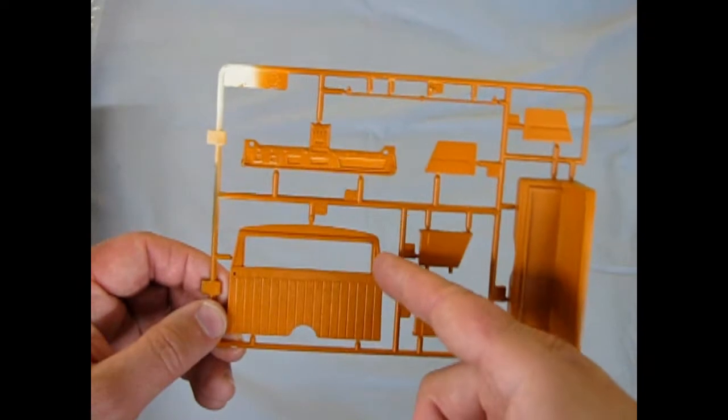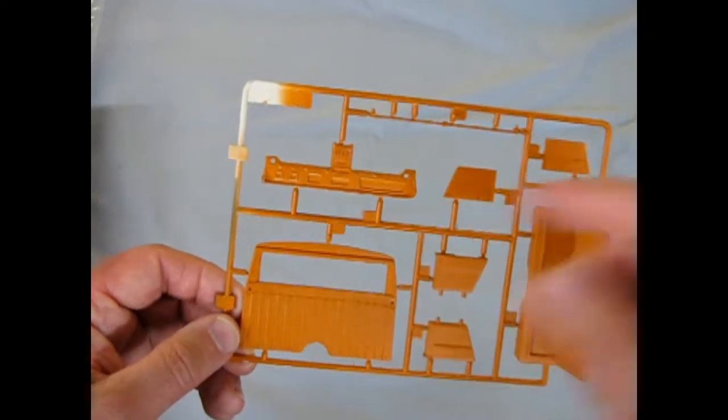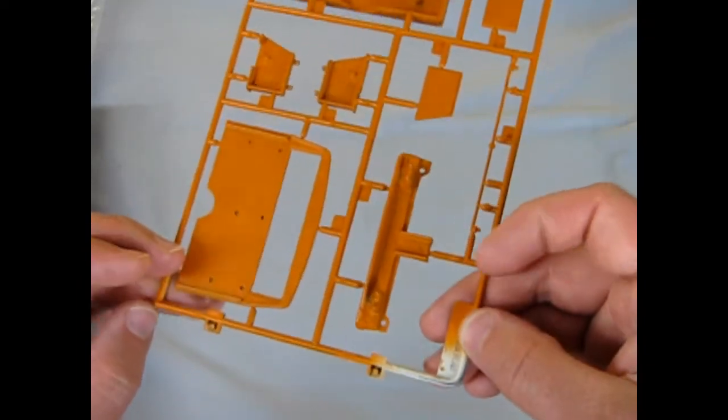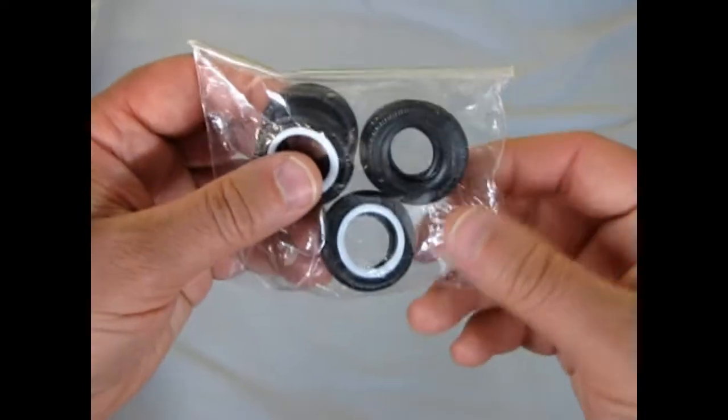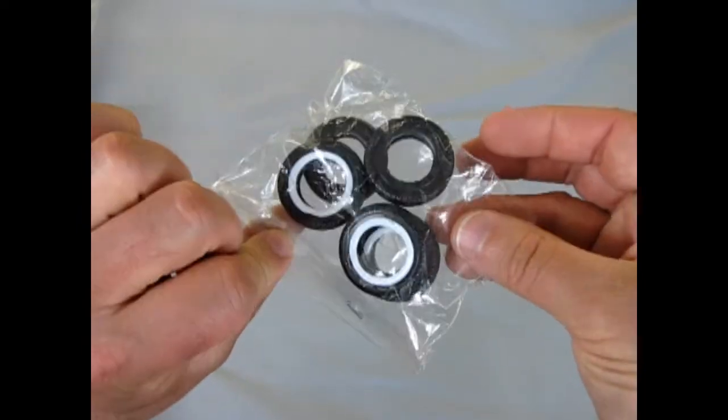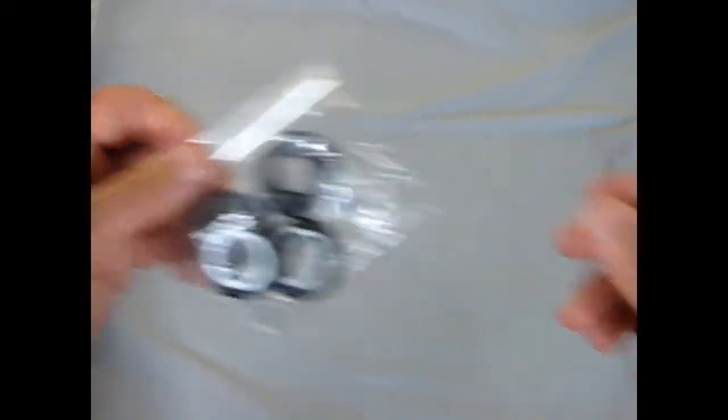Because as soon as you cut this off the tree, of course you're going to have a different color plastic there. That fell on the floor. Okay, so there's our tires again, which are the identical tires to the limousine kit.